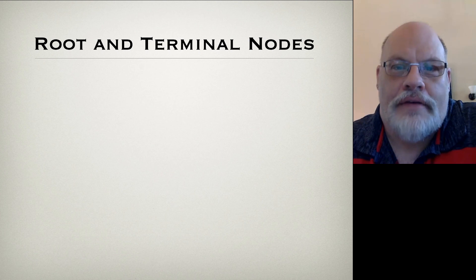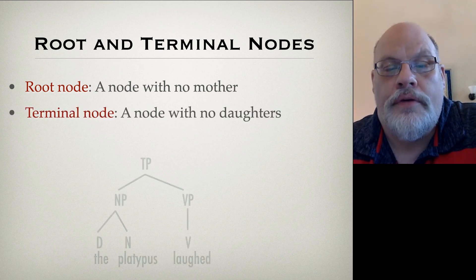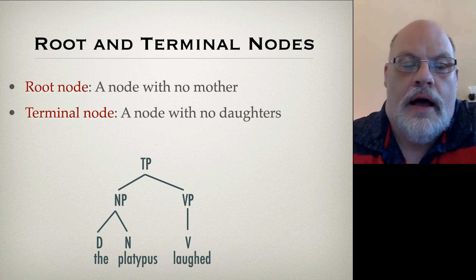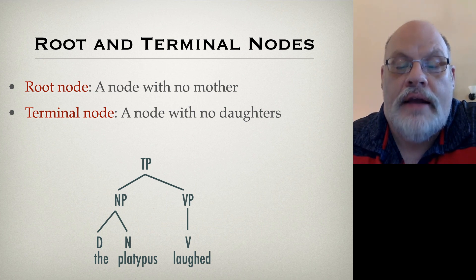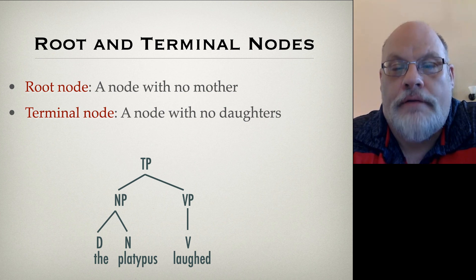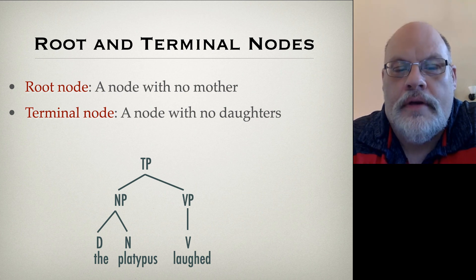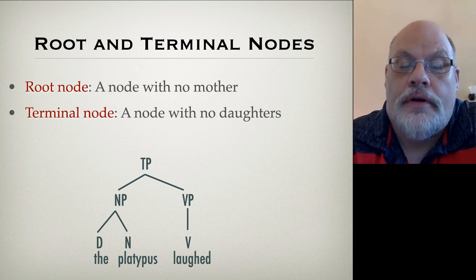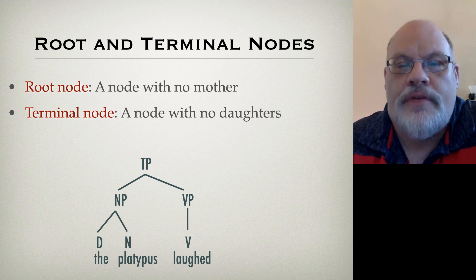This allows us to define root and terminal nodes. A root node is a node with no mother, and a terminal node is a node with no daughters. So in the sentence 'the platypus laughed,' the root node is the TP, and the terminal nodes are D, N, and V. This is the reason we don't want a line between the category and the word itself, because that would screw up this definition — D, N, and V would no longer be terminals; only the words themselves would be terminals. That's why we omit the line between the determiner and the word, so there's no line between D and 'the,' between N and 'platypus,' and V and 'laughed.'